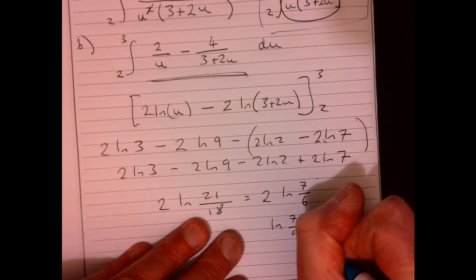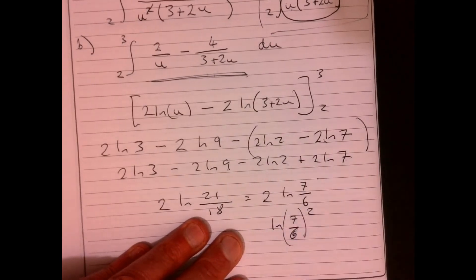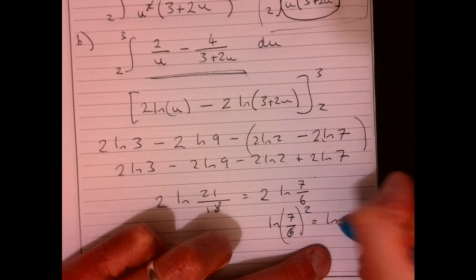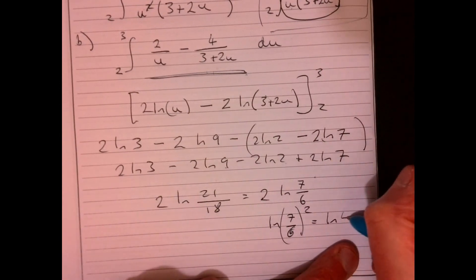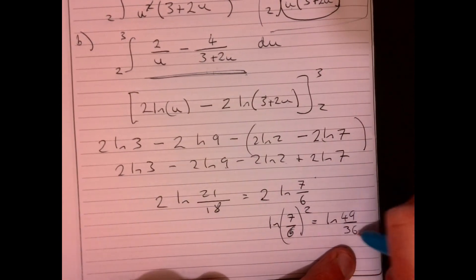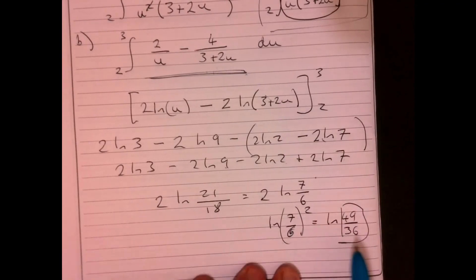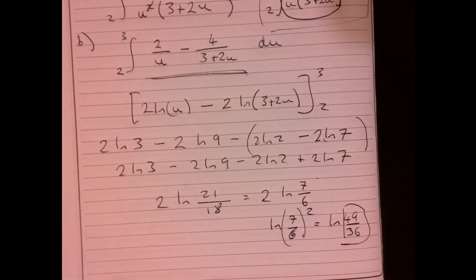Is that seven over six squared? It goes like that. So then that's going to give me ln over, well, seven squared is 49 over 36. So A is 49 over 36.